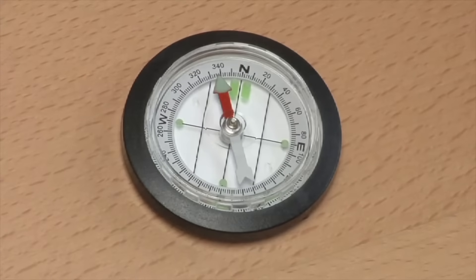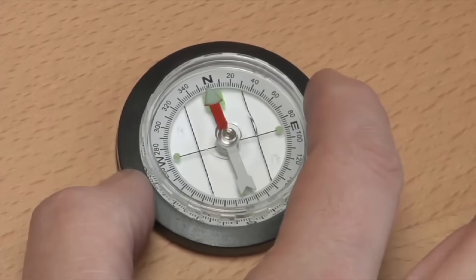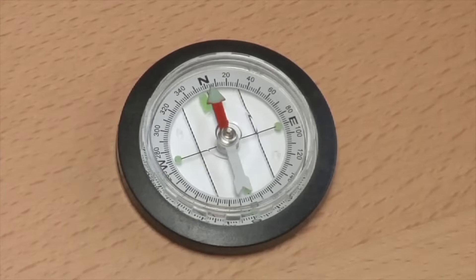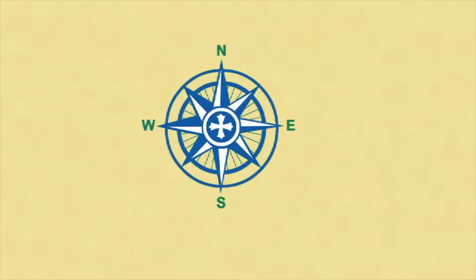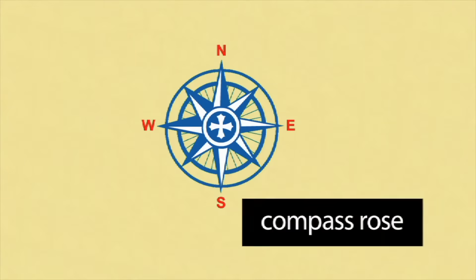Once the needle has found its direction, you can turn the compass until the spot on it marked north matches the direction the needle is pointing. On a map, north is usually at the top, south is at the bottom, east is to your right, and west is to your left. These directions are printed on a map in a cluster of arrows known as a compass rose.